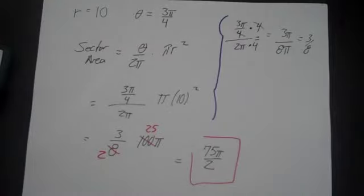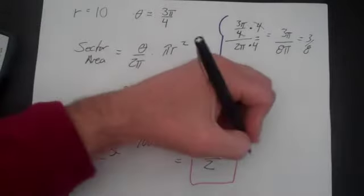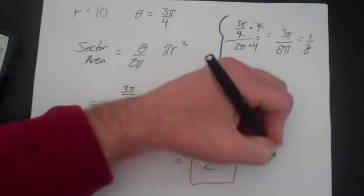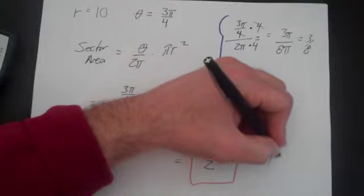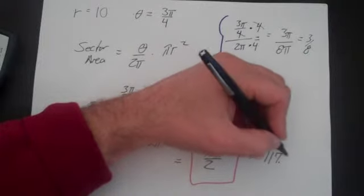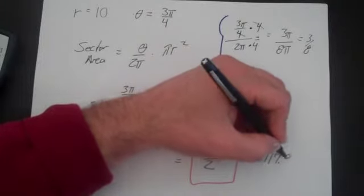If I wanted an approximate answer, I could go 75 times pi divided by 2 and I would get about 118. So if I round that to 3 decimal places, I would get 117.81.